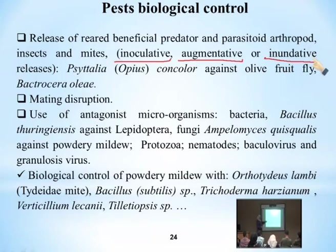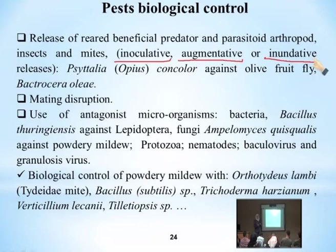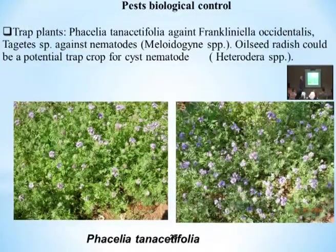Biological control is not only for insects but also for plant diseases. For example, for powdery mildew we use Orthotydeus lambi, which is a type of mite that feeds on fungi, or Bacillus subtilis, or Trichoderma, Verticillium lecanii, and Teleopsis species — all are microorganisms, entomopathogenic fungi that feed on harmful diseases.